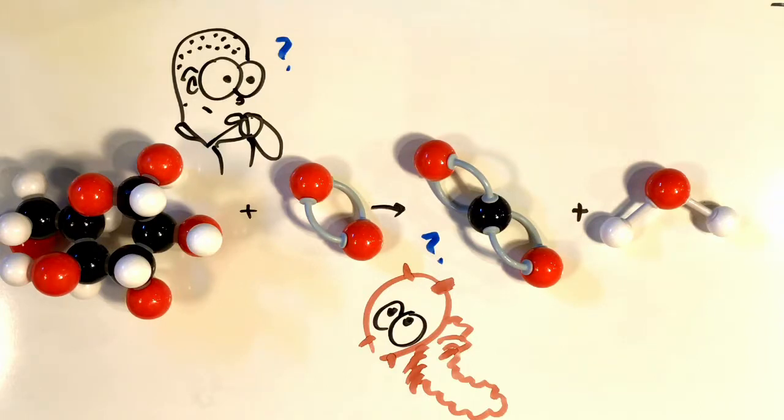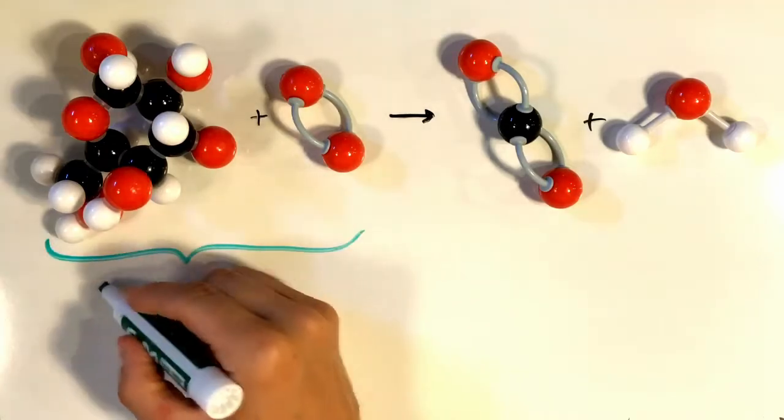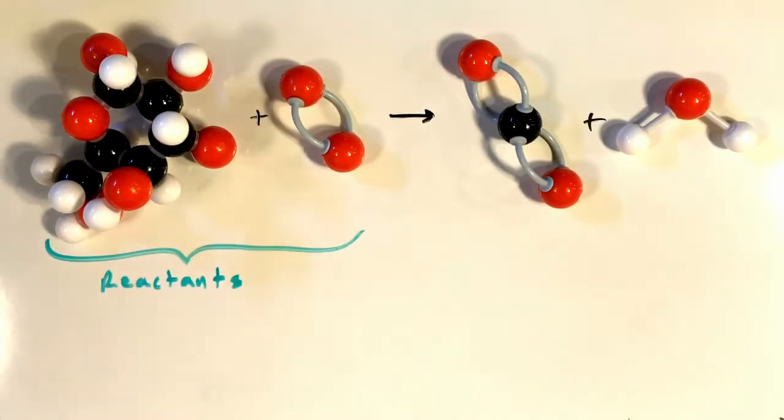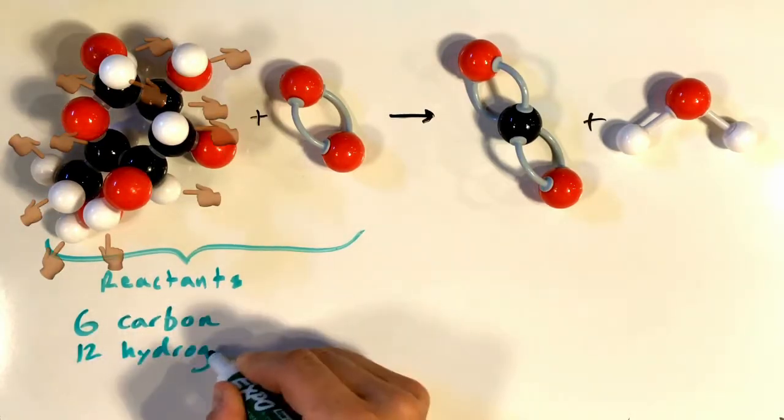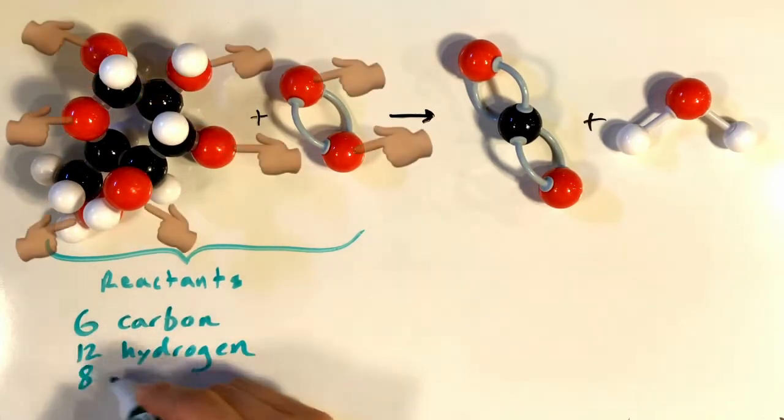How about we count the number of atoms on each side to find out whether they match? So on the reactants side, we count 6 carbons, 12 hydrogens, and 8 oxygens.